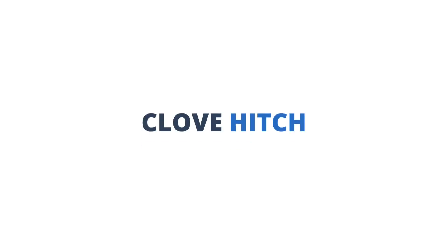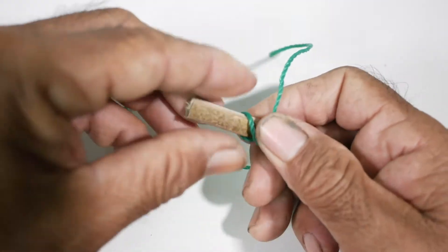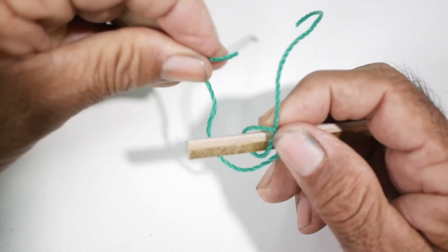The clove hitch is also used in mooring. However, it is easier to perform and can be tied using one hand.